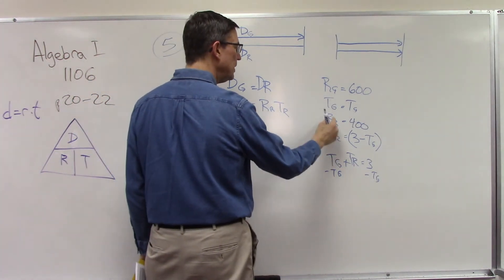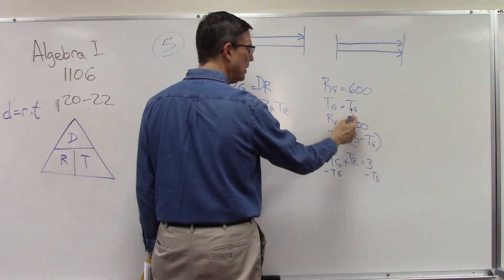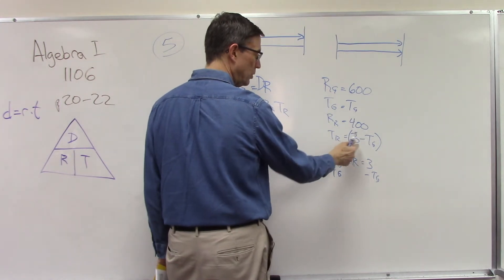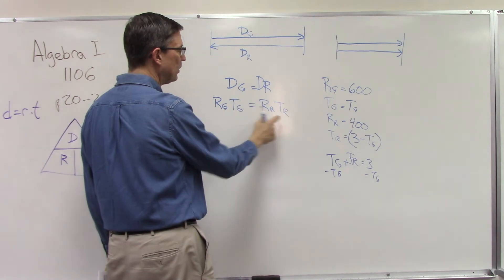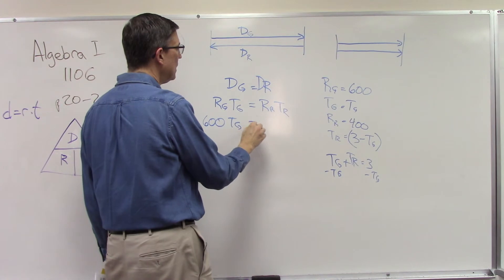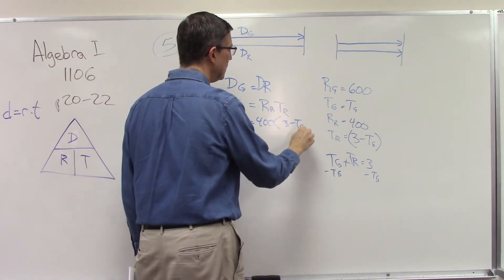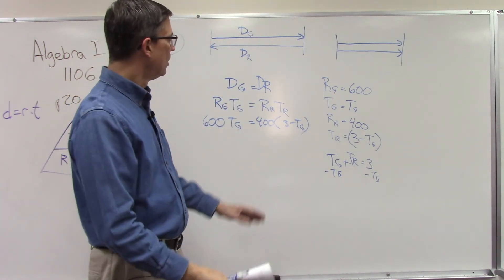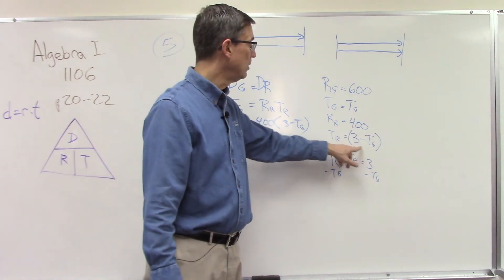Whatever t_g is, if it's 1 then t_r is 3 − 1 = 2; if it's 1.2 then t_r is 1.8. Now plug in: 600 × t_g = 400 × (3 − t_g). From here, solve for t_g, then plug that in to solve for t_r.